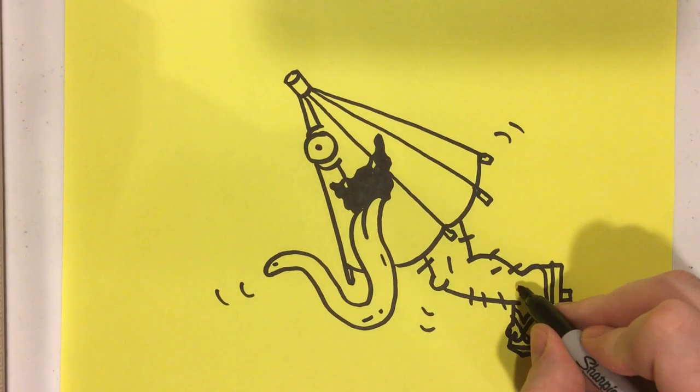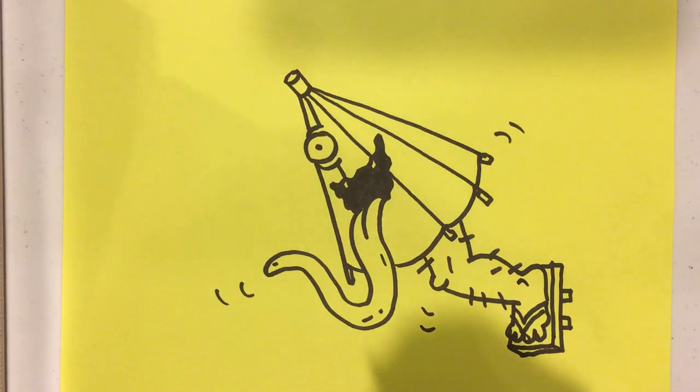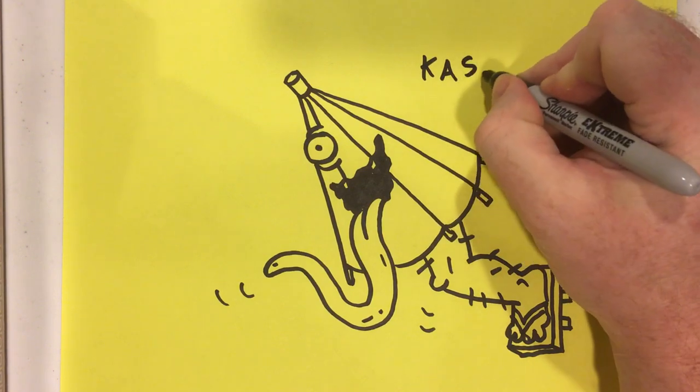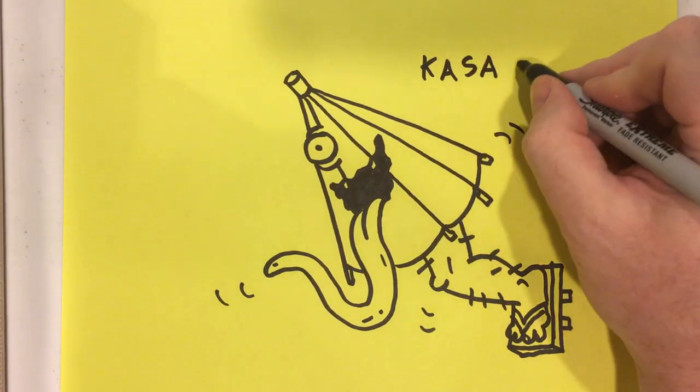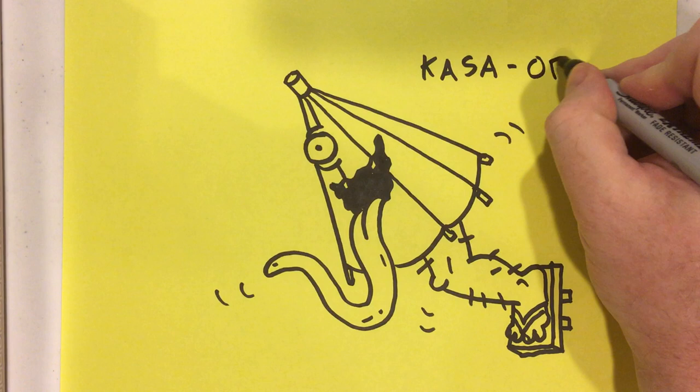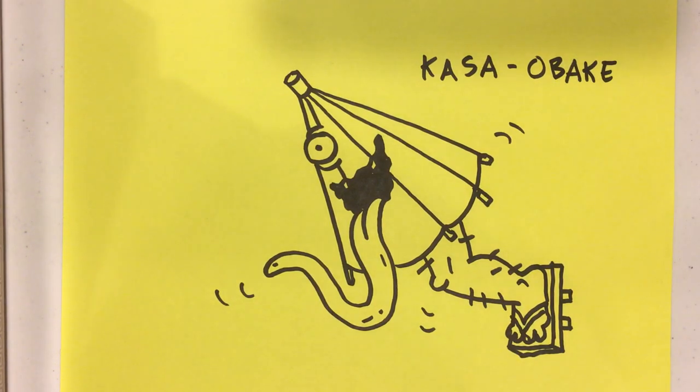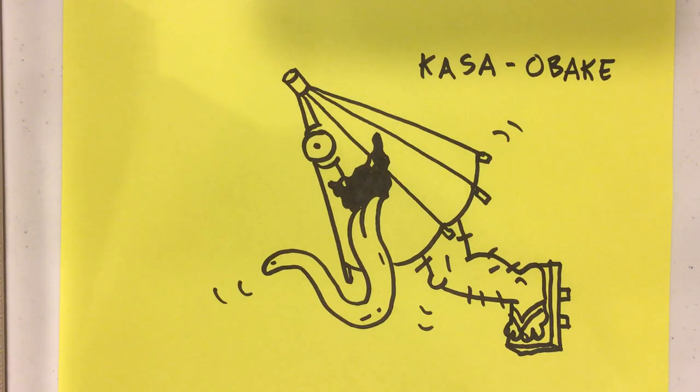And a little ankle. And so the Casa Ovaque is an umbrella ghost.